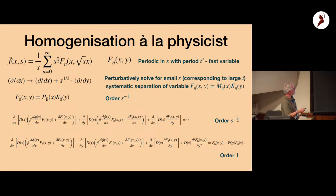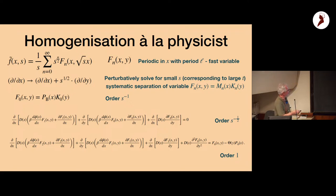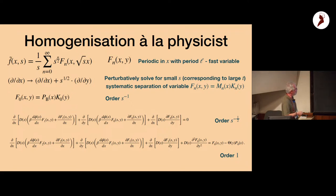At leading order, F₀(x,y) obeys the steady-state Fokker-Planck equation, periodic in x, so the solution is the Boltzmann distribution depending on some unknown function k₀(y). At next order you get an O(s^(−1/2)) term and then an O(1) term. The algebra isn't as horrible as it looks — when you integrate over x, periodicity causes boundary terms to vanish.